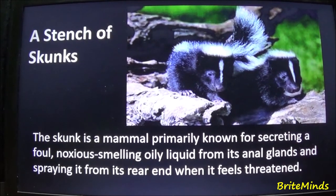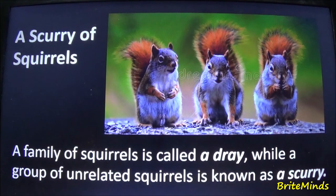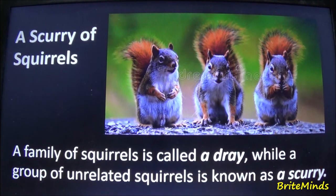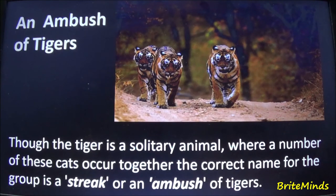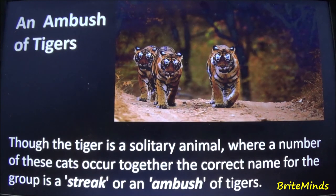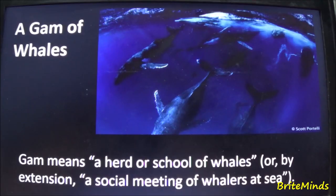A family of squirrels is called a drey, while a group of unrelated squirrels is known as a scurry. An ambush of tigers: though the tiger is a solitary animal, when a number of these cats occur together, the correct name for the group is a streak or an ambush of tigers. A gam of whales: gam means a herd or school of whales, or by extension a social meeting of whalers at sea.